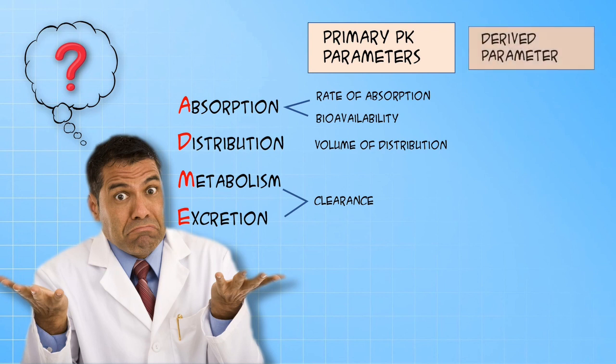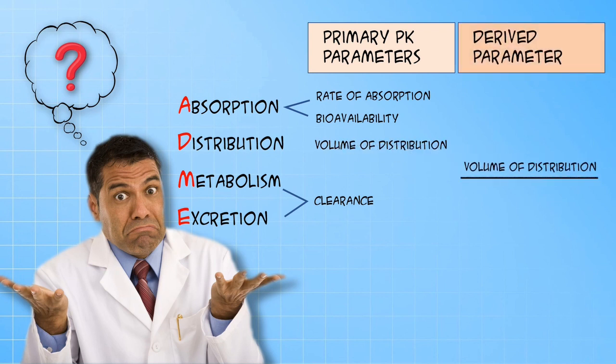Now the elimination half-life is often mistaken to be one of the primary parameters but actually it isn't. It is a derived parameter and related to volume of distribution divided by clearance. This you have done before and we've viewed a video on this particular problem so if you are still confused and unclear, please go back and refer to that video.